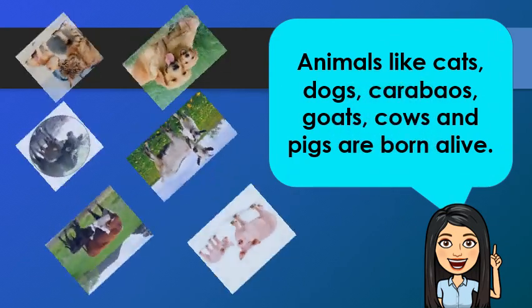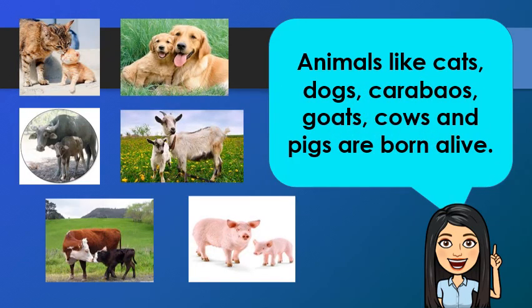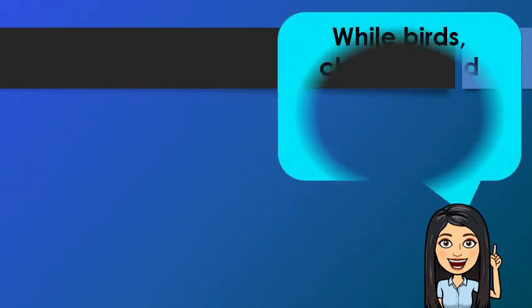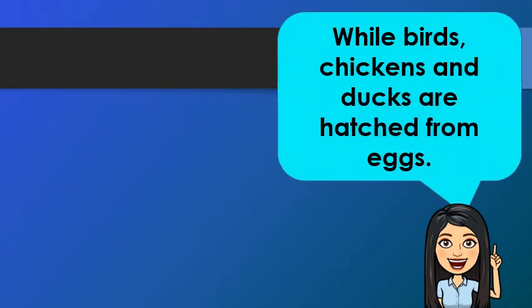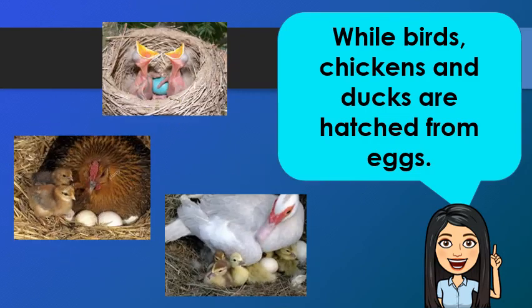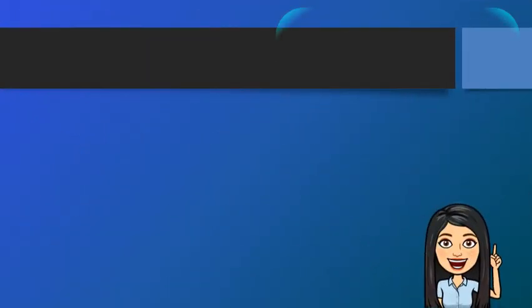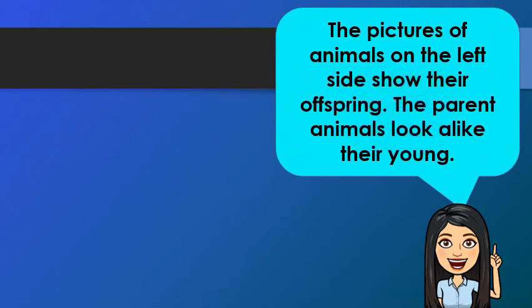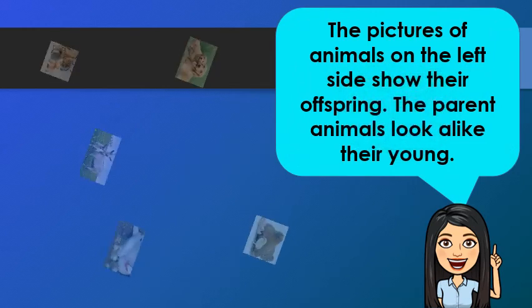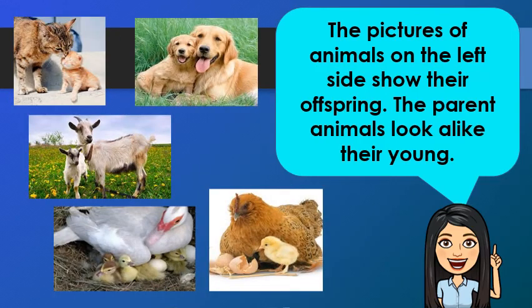Animals like cats, dogs, carabaos, goats, cows, and pigs are born alive. They are called viviparous animals. While birds, chickens, and ducks are hatched from eggs — they are what we call oviparous animals. The pictures of animals show their offspring. The parent animals look alike their young; they have similar traits and characteristics.